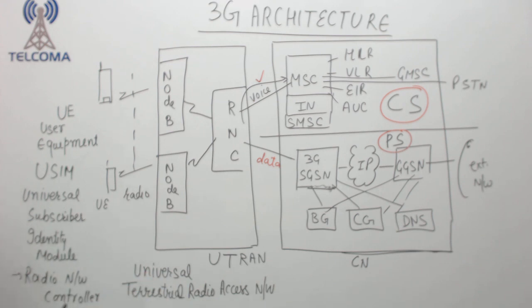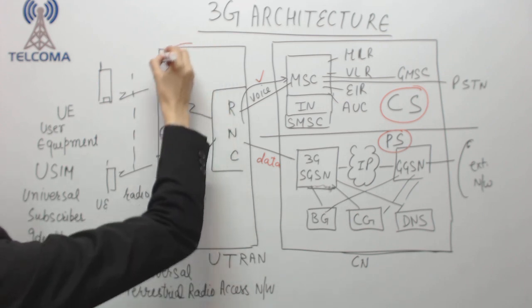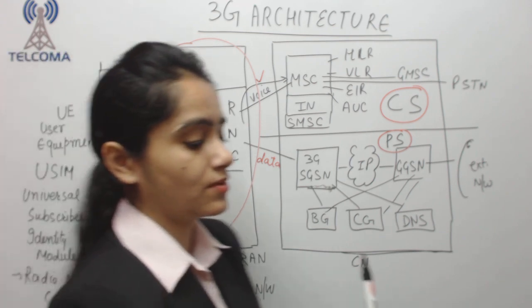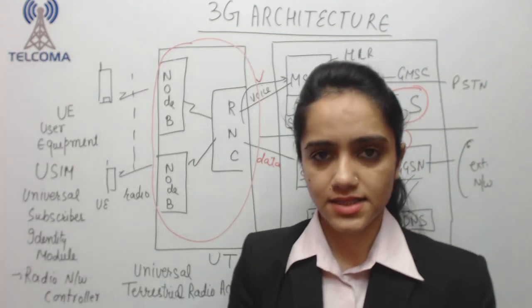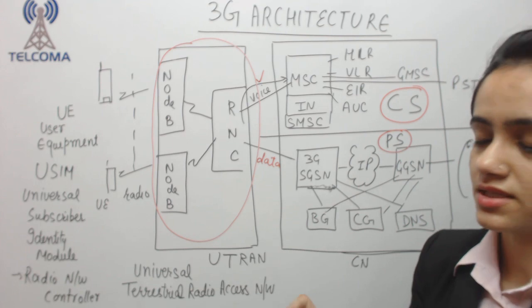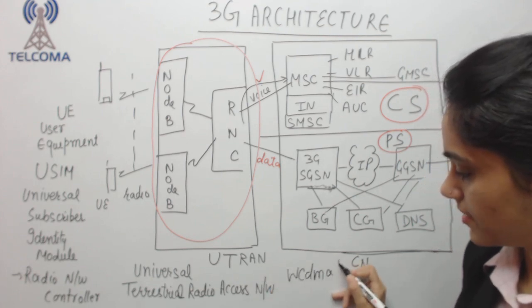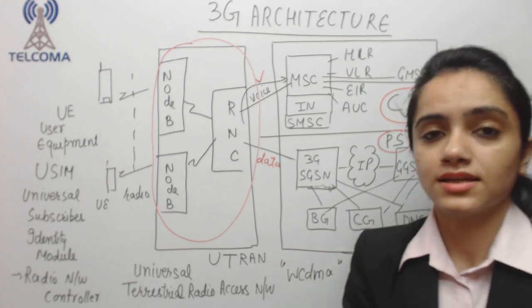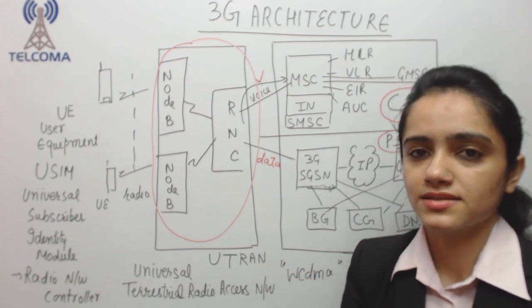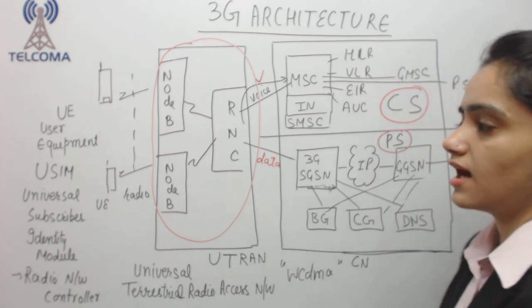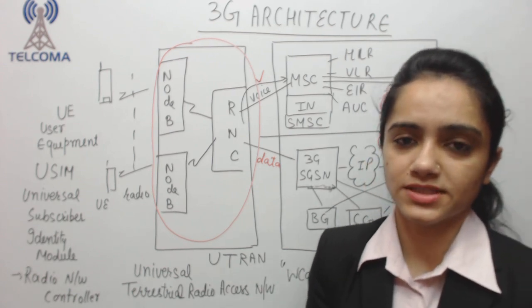From EDGE network or GPRS network to 3G, we have a major change in the radio part. For 3G purpose we have changed the radio part because the radio access technology here is WCDMA. 3G is working on WCDMA, Wide Band Code Division Multiple Access, whereas the radio access technique in 2G is TDMA, Time Division Multiple Access. So this is the 3G architecture. Thank you so much.